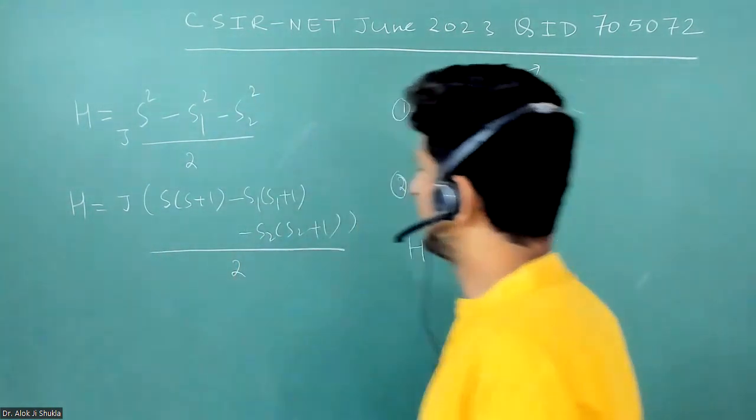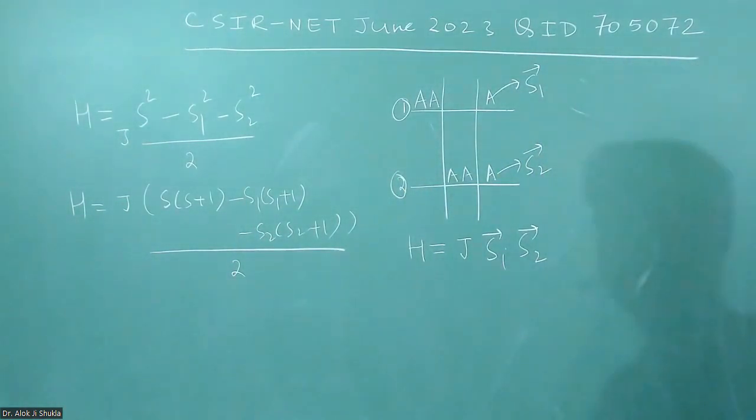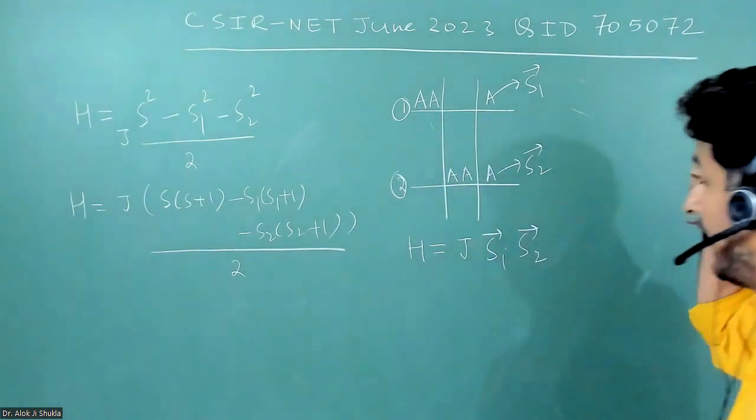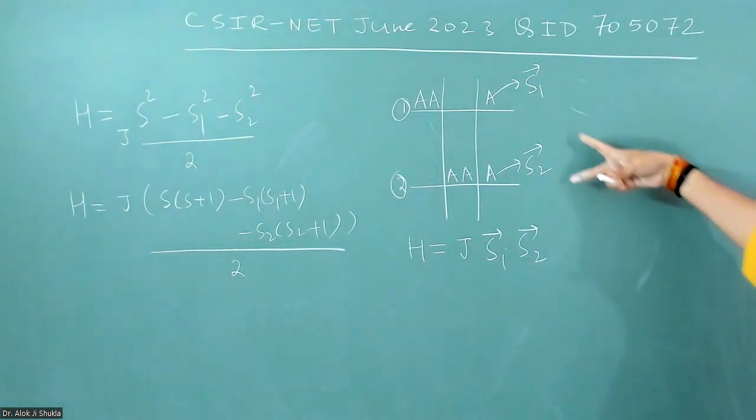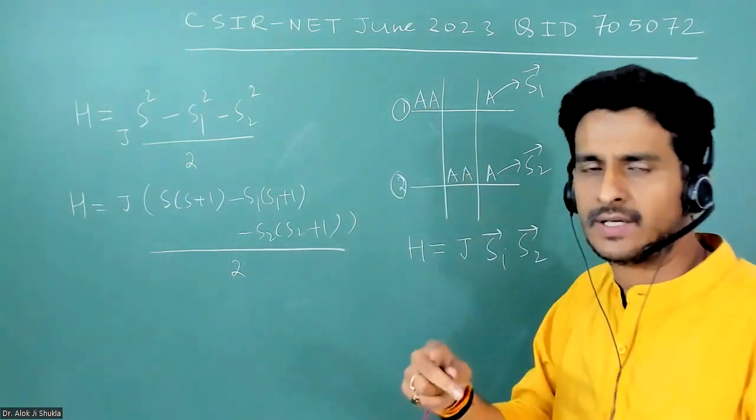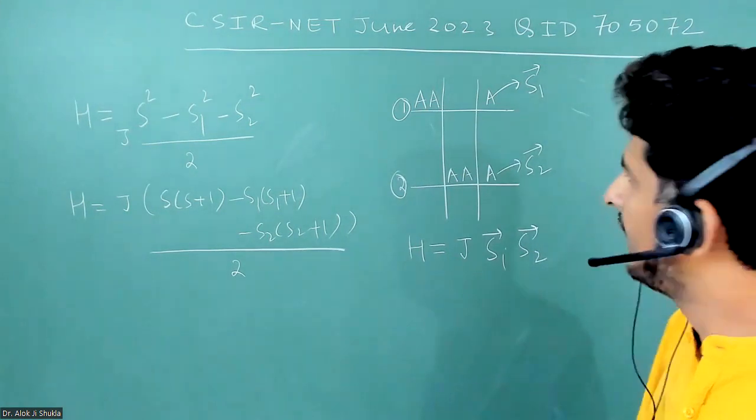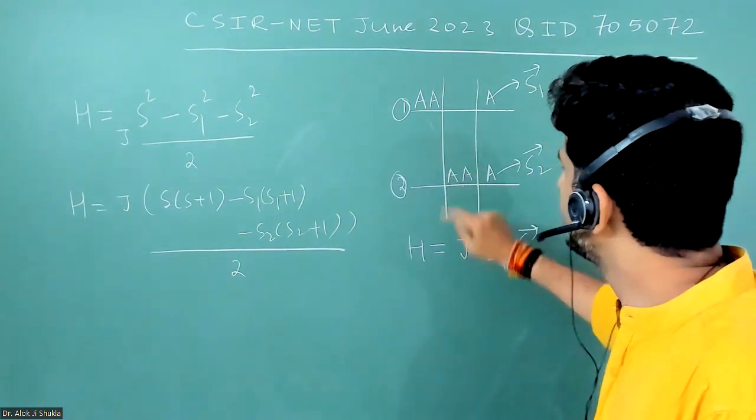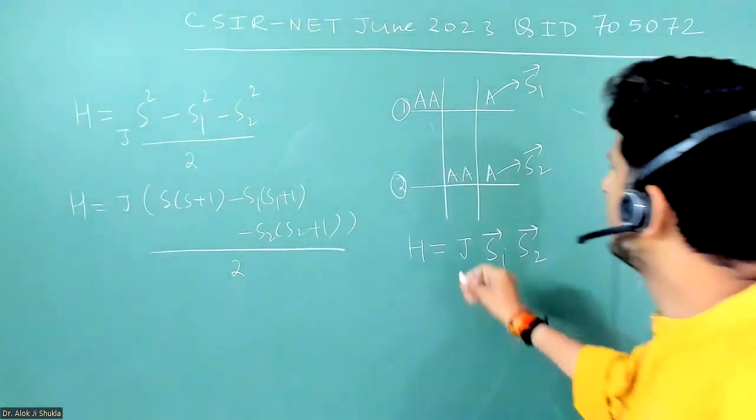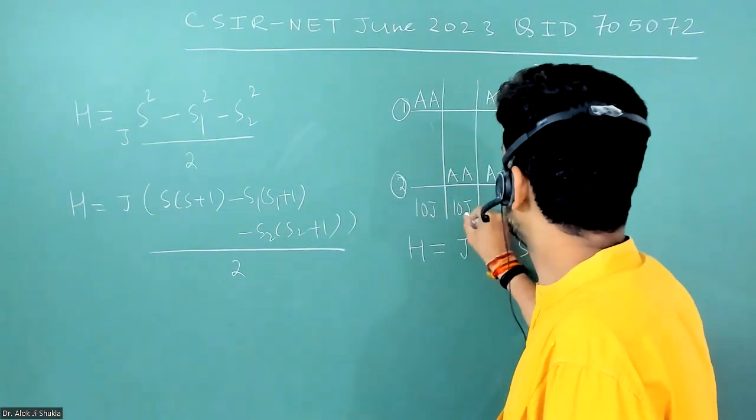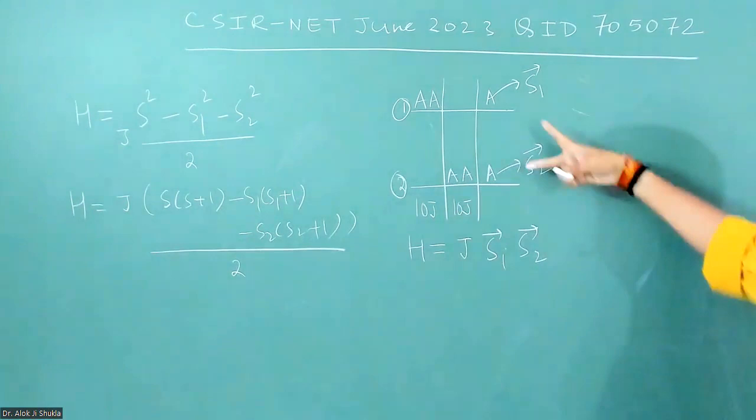So this is the interaction Hamiltonian. Now two microstates are this, and other microstates will be formed by the interaction of S1 and S2. But it is given in the question that when they are at the same sites, the energy is confirmed and that is equal to 10 J. And when they are at different sites, then there will be the interaction.